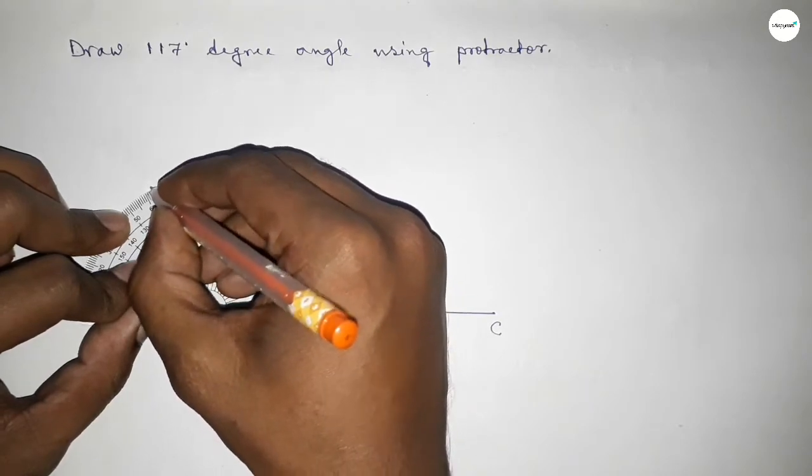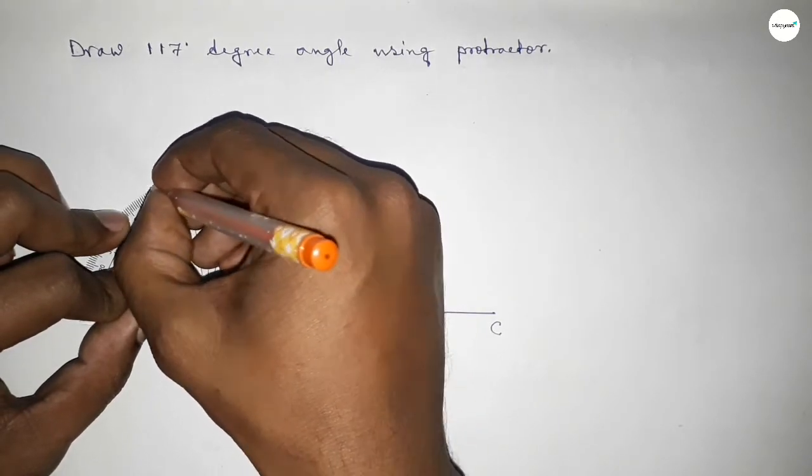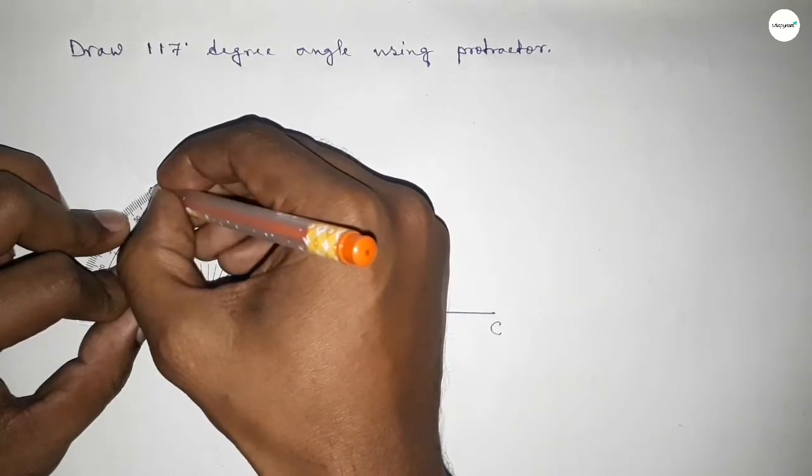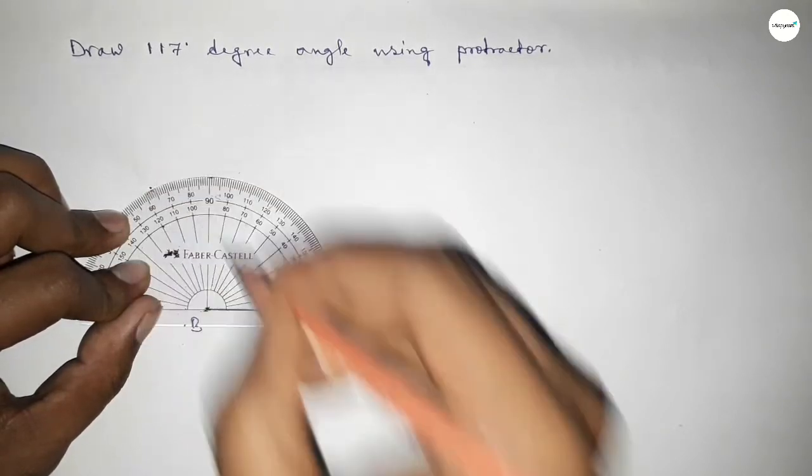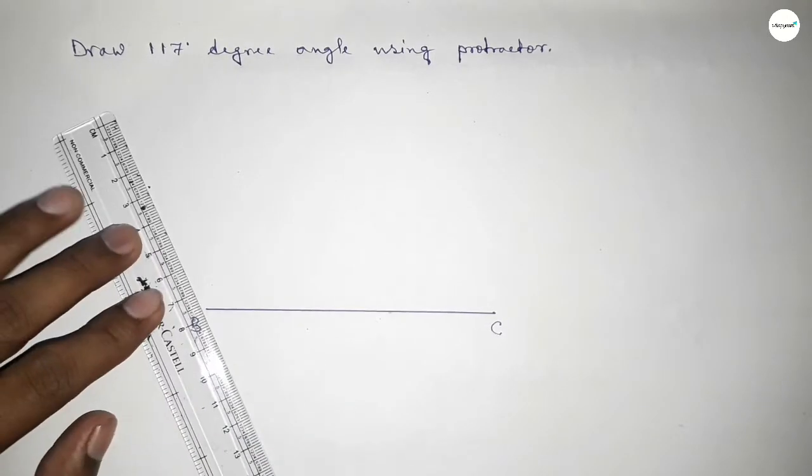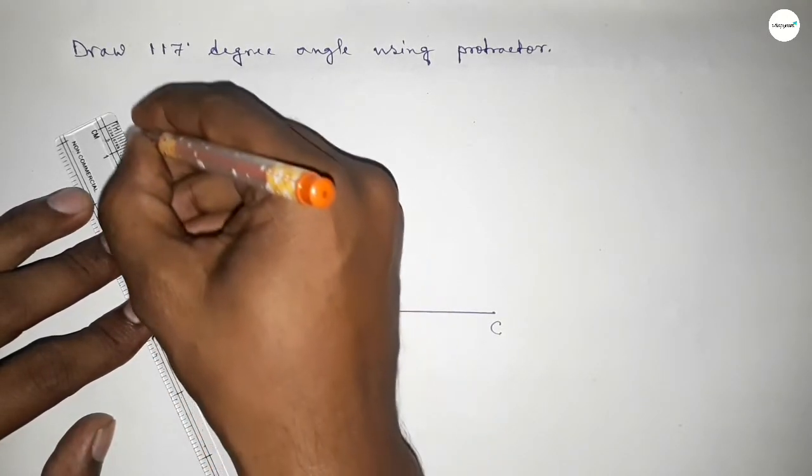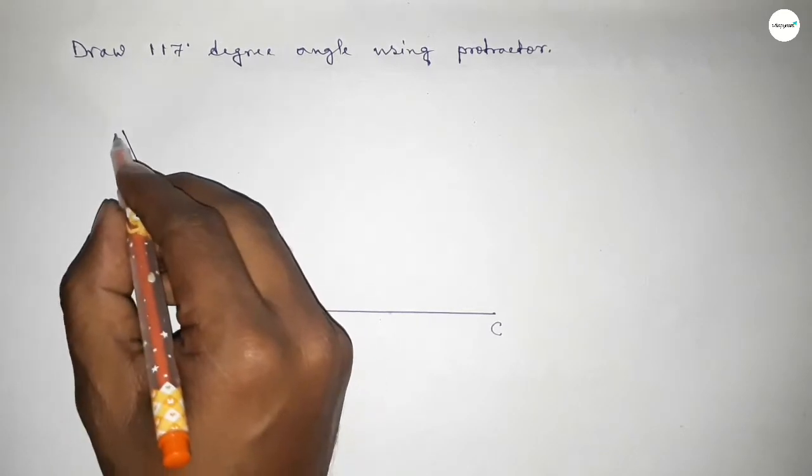Now this is 117 degrees. Now joining this side to get 117 degrees and taking here point A.